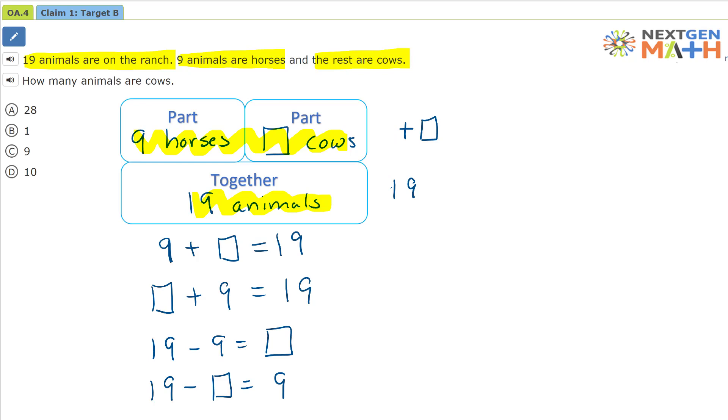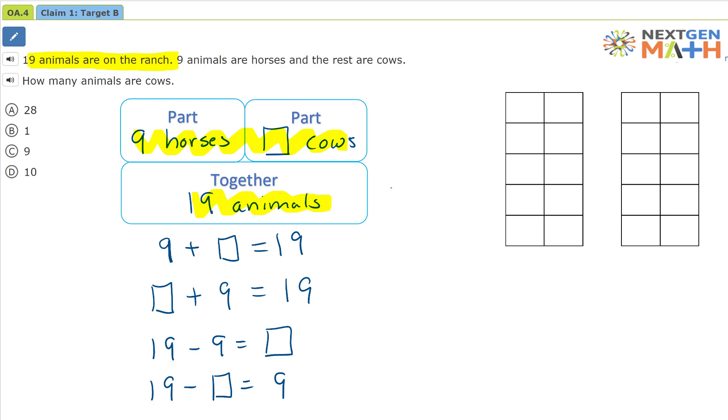But let's go ahead and first solve this problem. Nineteen animals are on the ranch. We're going to use the double ten frame to help solve it. So I'm going to color in nineteen squares for the nineteen animals. Here are the nineteen animals.